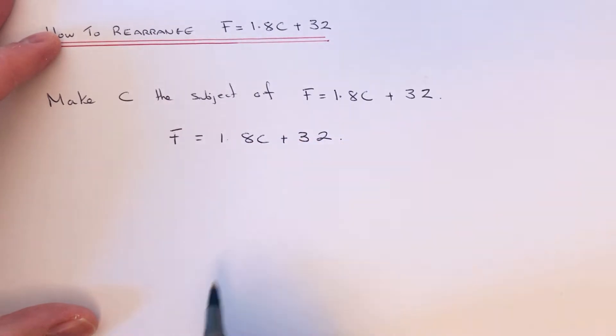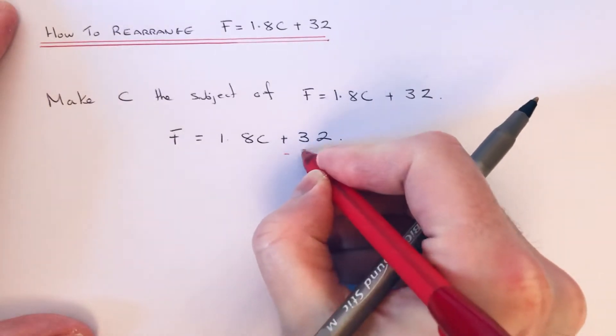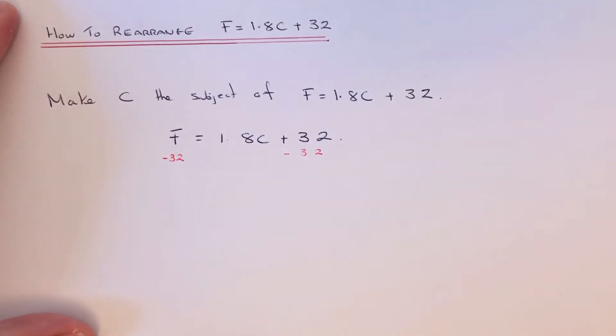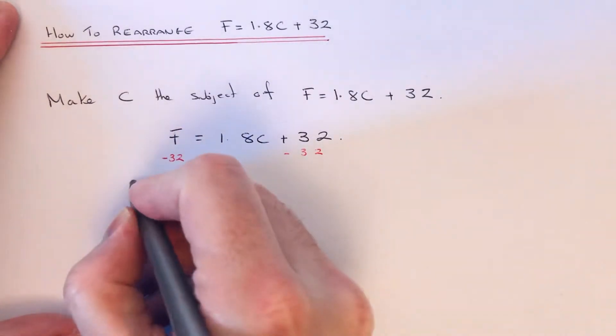So we need to do the inverses in reverse order. First of all, we do the opposite to plus 32, which is to take 32 off both sides. So we can write this bit down here as F minus 32.